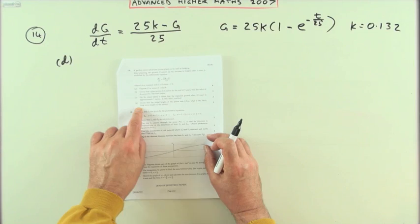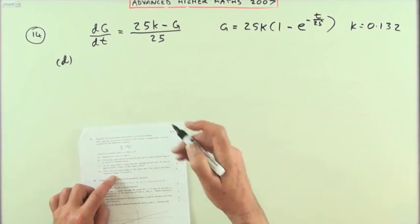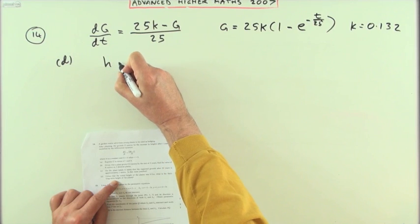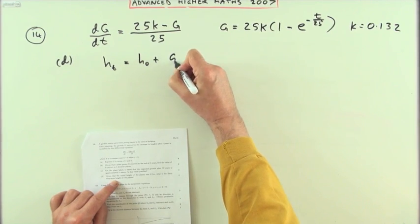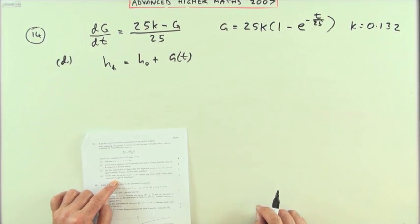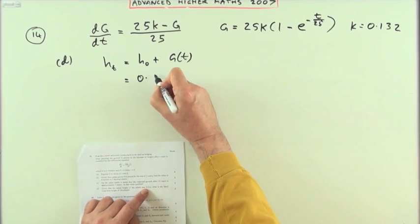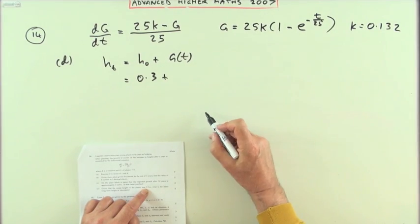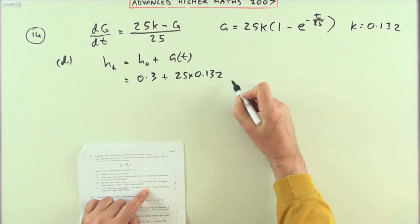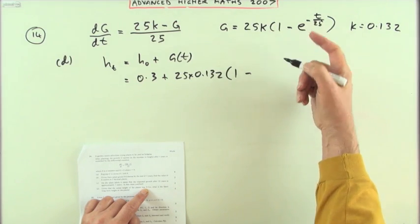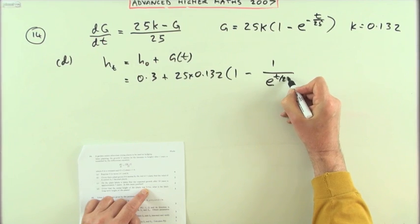Now for part D, given that the initial height of the plants was 0.3, remember g was the growth, what's the likely long-term height? Well if we just put down the formula, the height of the plant after a certain time would be its initial height plus its growth, which of course depends on the time it took. It said the initial height of the plant was 0.3 metres, and the growth is given by this equation, so it'll be plus 25 times 0.132 times (1 - 1/e^(t/25)).